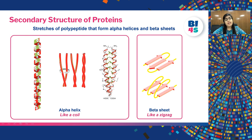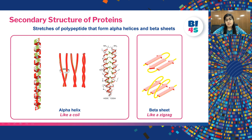The alpha helix was first discovered in keratin protein. Keratin is a protein that makes your hair, skin and nails. In keratin, two alpha helices wrap around each other to form a stable structure known as a coiled coil. The third figure here shows the actual structure of the coiled coil.